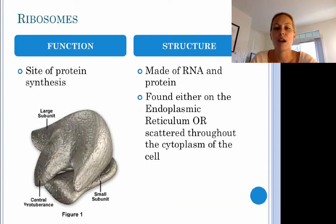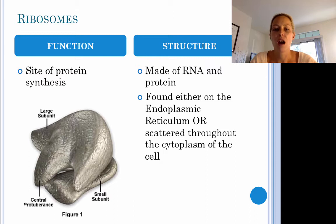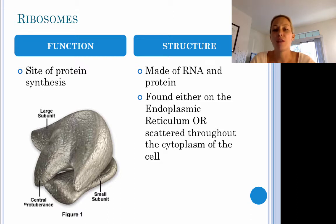Next we have ribosomes, which are the site of protein synthesis. They interpret the genetic information that comes out of the nucleus as RNA, read that RNA, and produce proteins by stringing together different amino acids. Ribosomes are the only non-membrane-bound organelle — they're made up of RNA and protein. They can either be found on the rough endoplasmic reticulum or scattered throughout the cytoplasm of the cell.